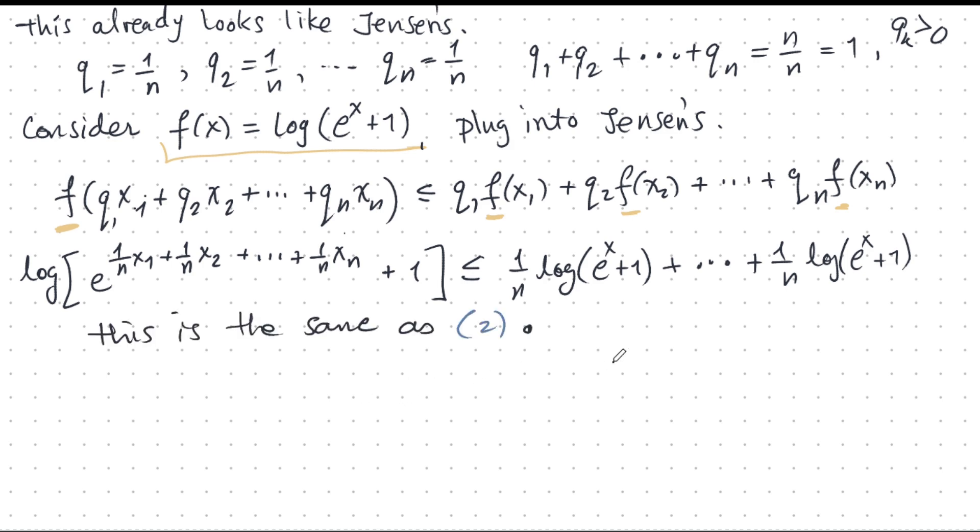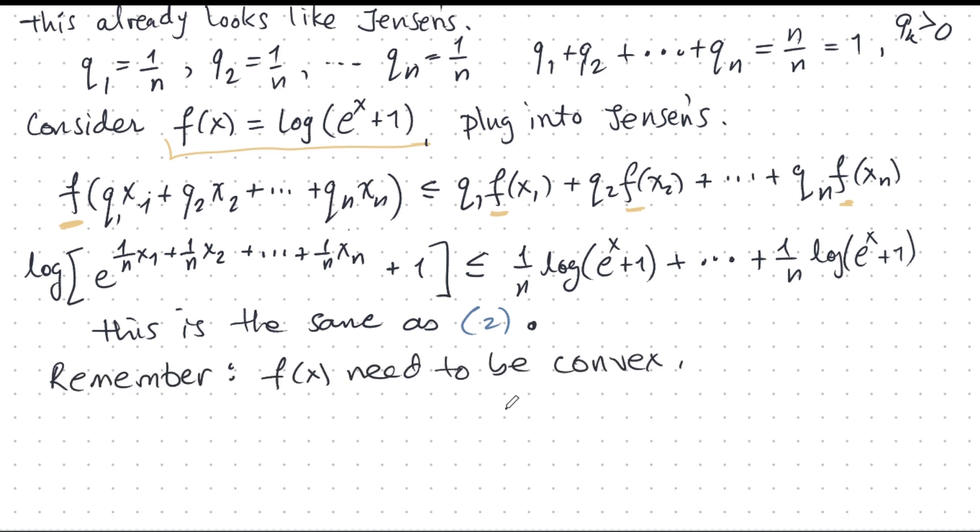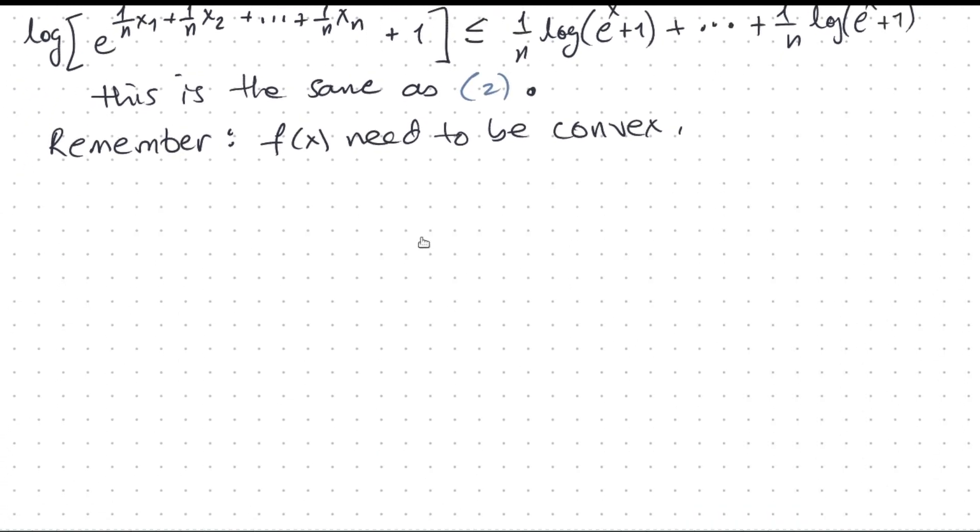Now, this is exactly the same thing as 2. So I know what you're thinking. You're thinking, ha ha, we're done. Yay, yay. No, we're not done. We're not done because we don't know if f is convex. Remember, f needs to be convex for Jensen's inequality to work. And we need to prove this. Okay, so I need some room.